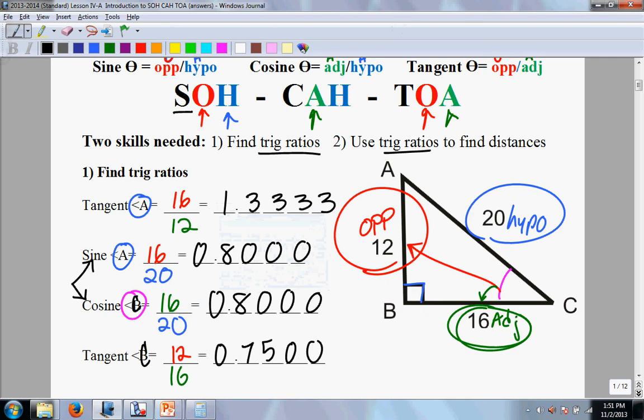So that's how you find trig ratios if you have sides. You simply follow SOH CAH TOA, you divide, you get your decimal, take it to the fourth. Notice your opposite and adjacent can change depending on where your angle is, so be careful with that.